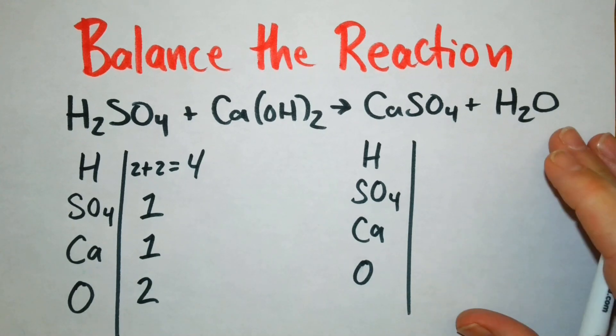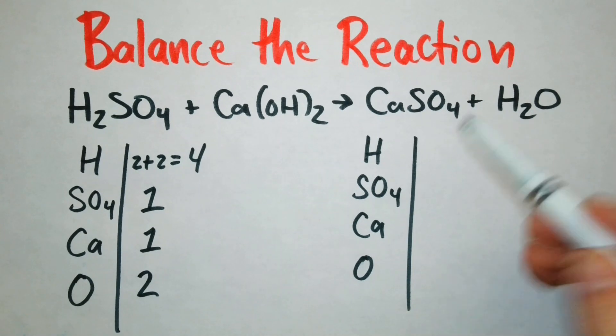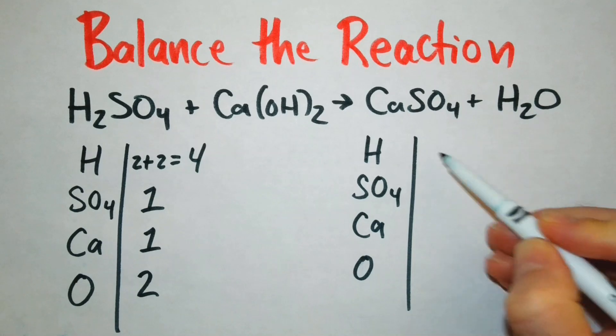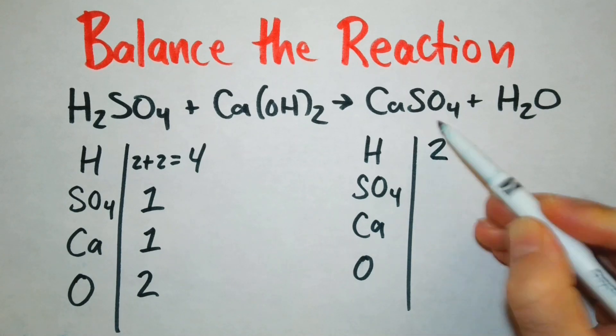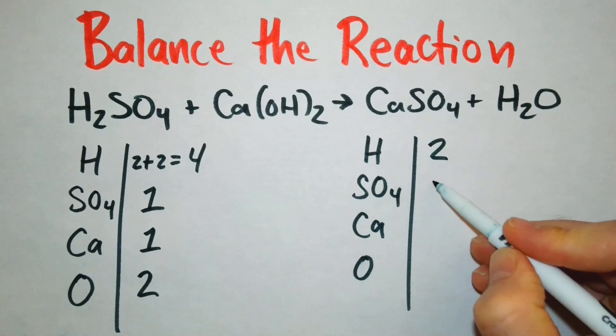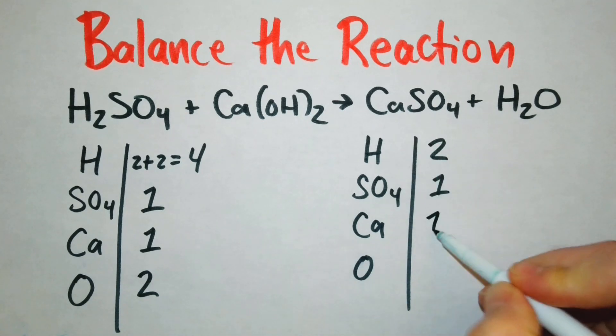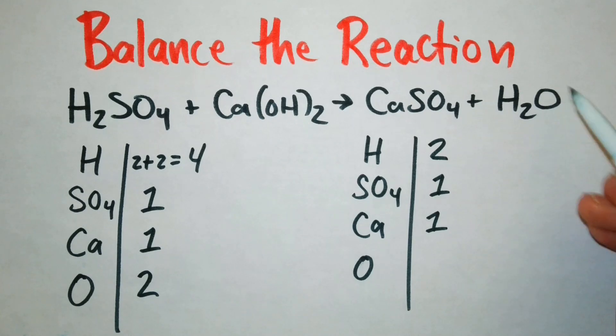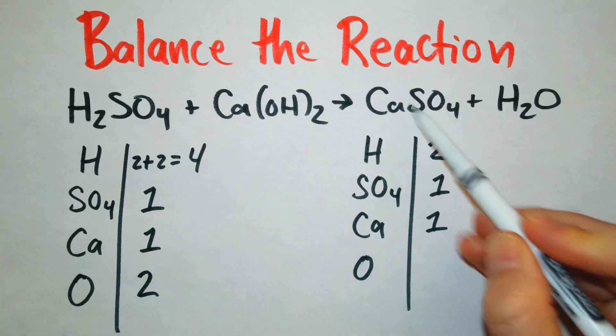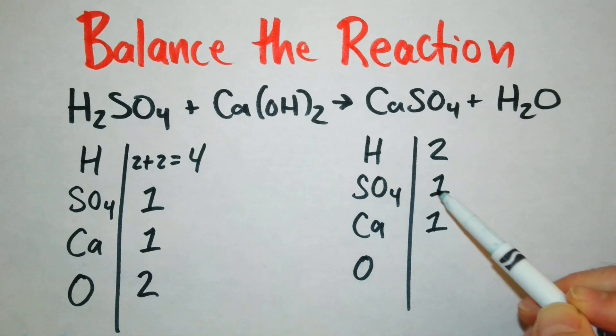Now let's count on the other side of the equation. So now we have two hydrogens here. We have one SO4 group. We have one calcium group and now we need to keep track of this oxygen right here. We're not counting the oxygens in SO4 group because they are already listed right here. They're already counted for. So we have one oxygen here.